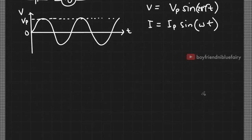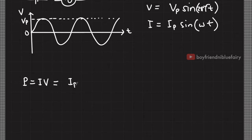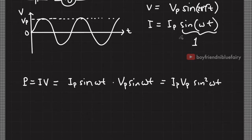Let's now calculate the power delivered in an AC circuit. The equation for power is P equals current times voltage. If we plug in the expressions, I'll end up with I sub P sine(ωT) times V sub P sine(ωT), which equals I sub P times V sub P times sine squared(ωT). V sub P is the peak voltage, and the maximum value of the sine function is 1, which implies the current is also at its maximum — so this is the peak current.